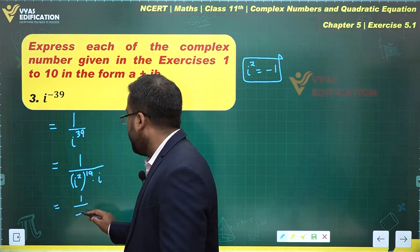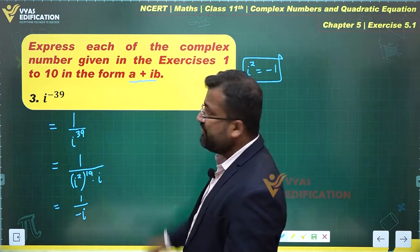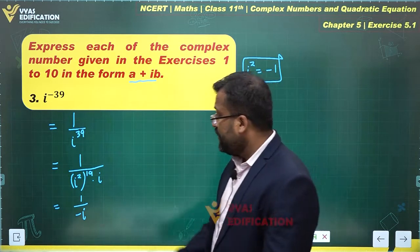So this gives me 1 upon minus i. But is it in the form of a plus ib? No. For that we need to bring this i to the top.